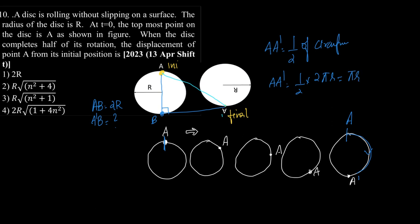In which case, what is A dash B? Now we can write that A dash B is actually πr. So if you summarize the diagram, what we need to find out is AA dash, AB is 2r, BA dash is πr.